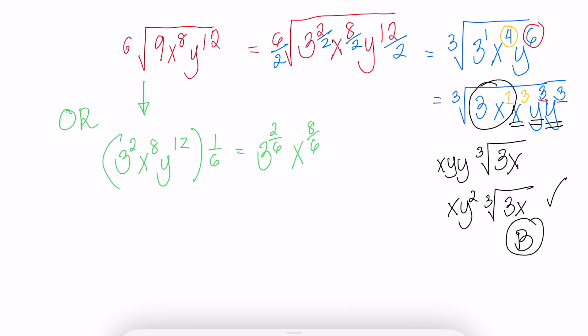You distribute 1 over 6 to all the exponents by multiplication. Simplify it further: 3 raised to 1 third, x raised to 4 thirds, and y raised to 2.